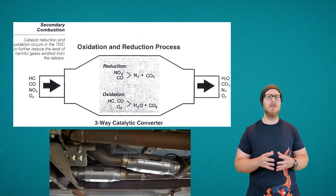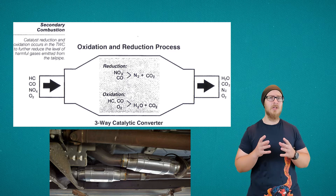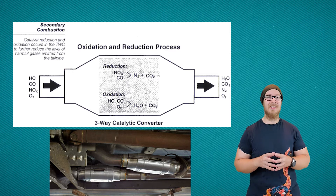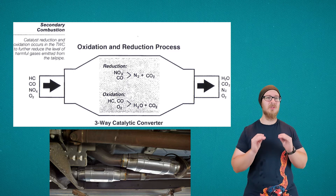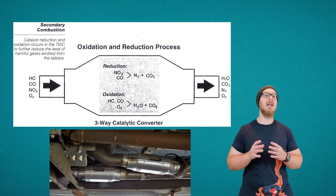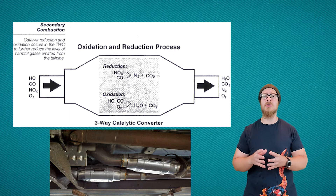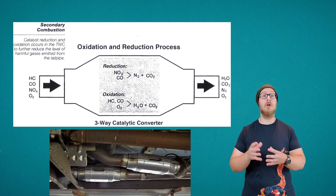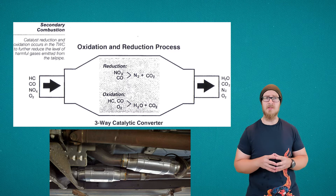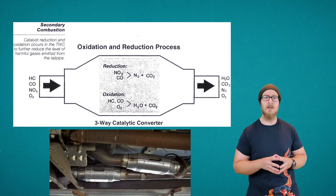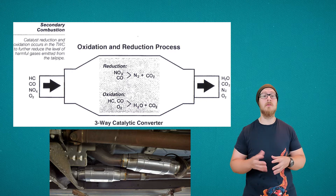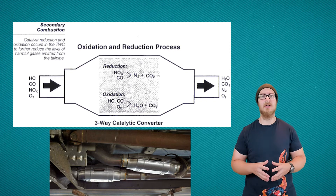Cars also have a part called the catalytic converter, which uses a series of metals and other compounds that react with common car emissions, reducing the amount released. A catalytic converter converts nitrogen oxides to nitrogen gas and carbon monoxide to carbon dioxide. The CO2 is a bad greenhouse gas, but at least it's not toxic. It also reduces the release of unburned hydrocarbons from the engine to water and carbon dioxide.